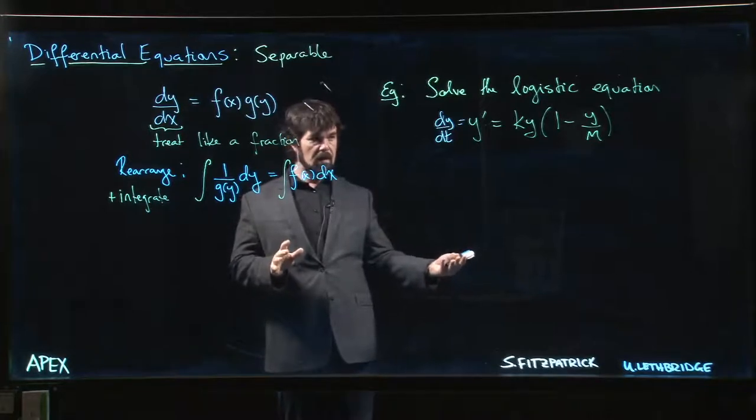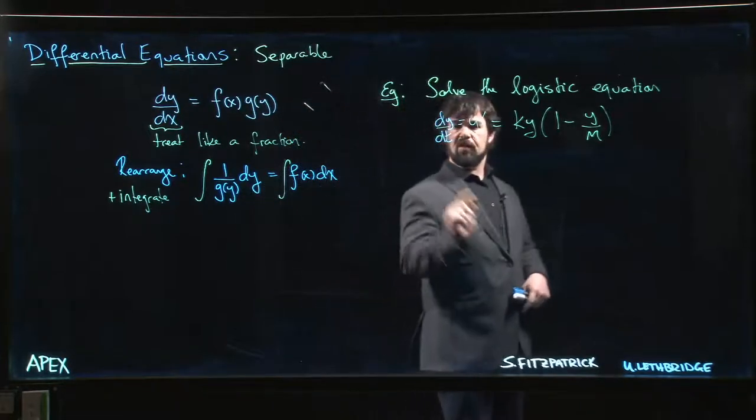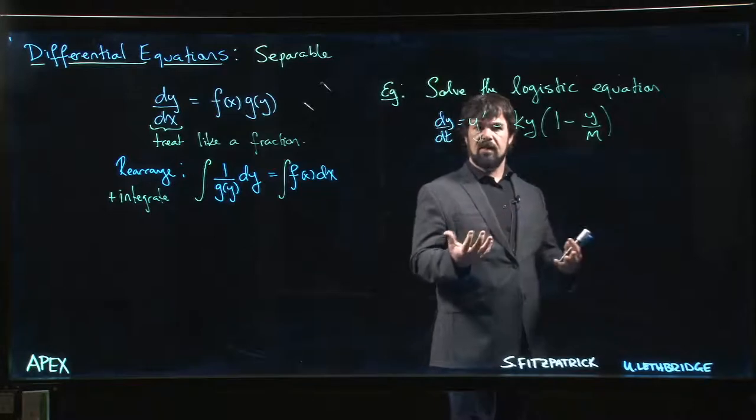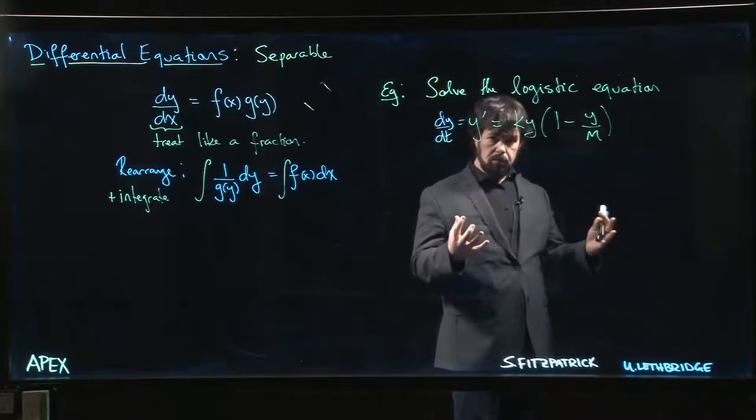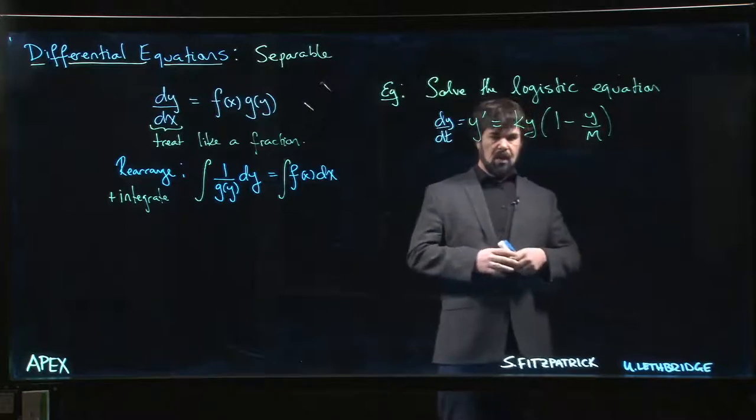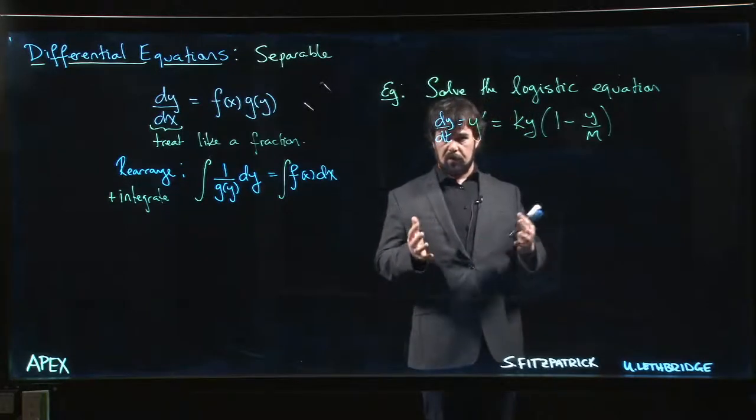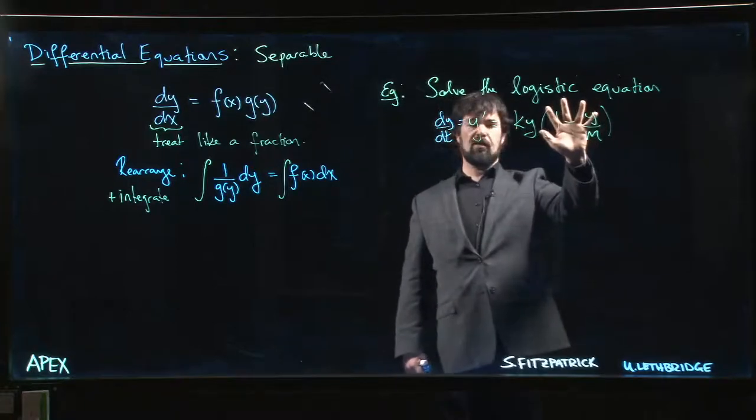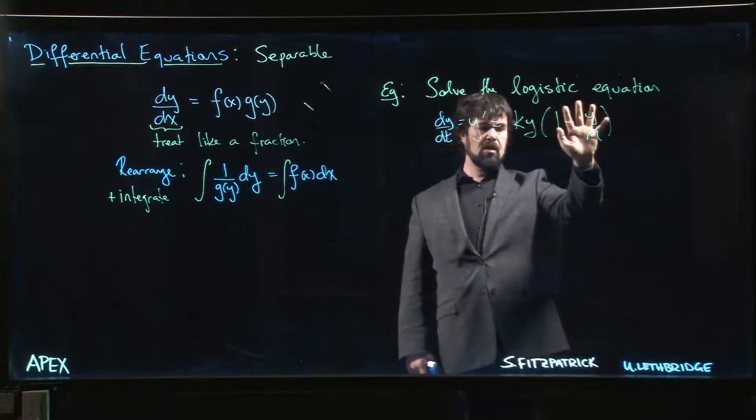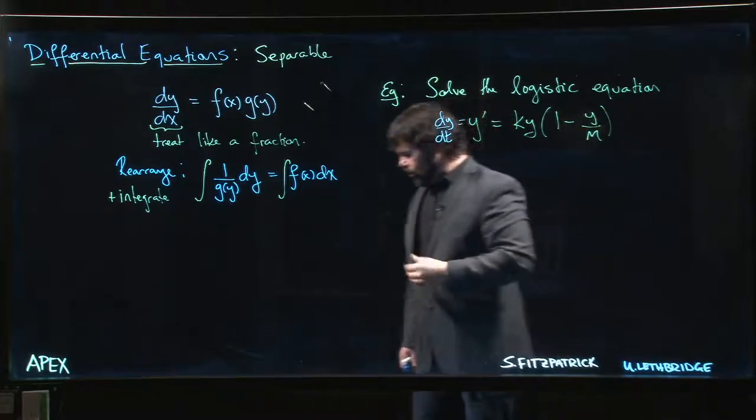Okay, so in this case the independent variable is t. We think of t as time because this is an equation that's used to model populations. It's meant to be an improvement over the basic exponential growth model. If this term is gone, that's the exponential growth equation.